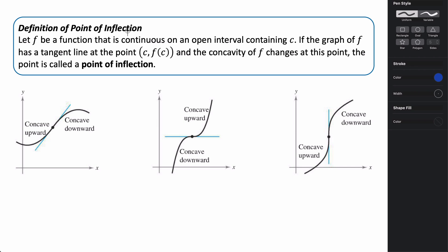The definition of a point of inflection. If we're given a function f that is continuous on some open interval containing c, and if the graph of f has a tangent line at the point (c, f(c)), and the concavity of f changes at this point, we call that point a point of inflection.